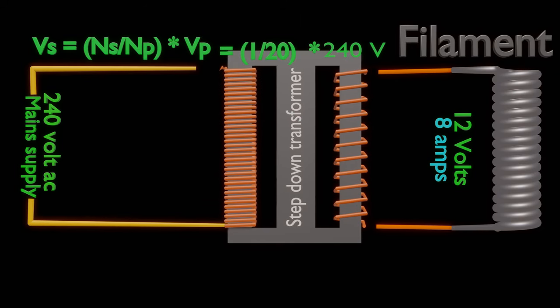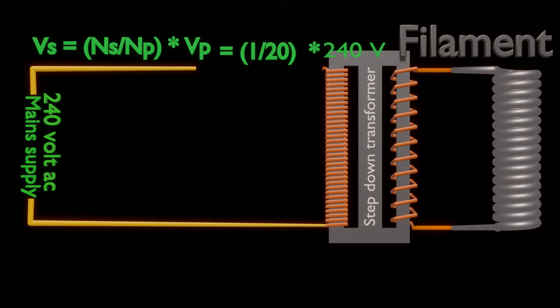Different body sites or diagnostic procedures need different tube current. For different tube current, we need to apply different filament current. To vary current in the filament, we need to vary voltage across secondary of the step-down transformer. But the step-down transformer has fixed turn ratio. The only way to have variable voltage at secondary is to apply variable voltage to its primary. Variation in input voltage to primary is achieved by use of an MA selector.